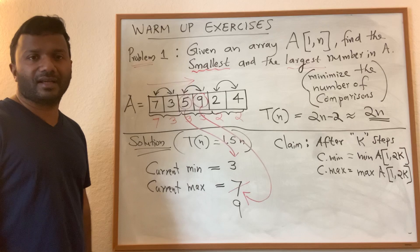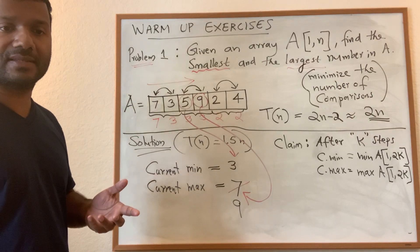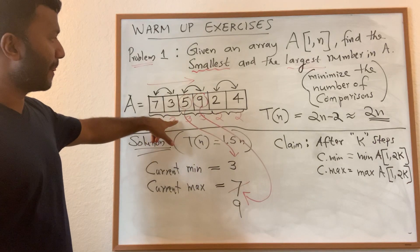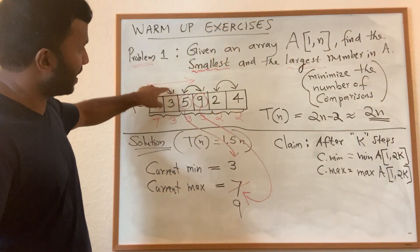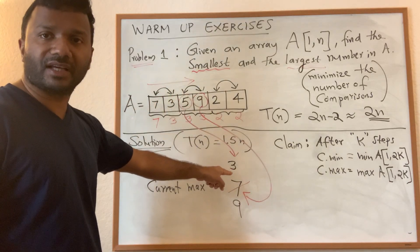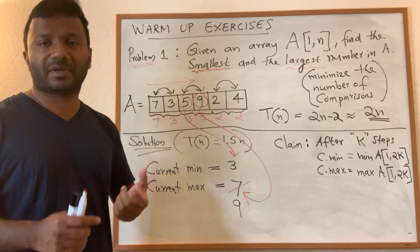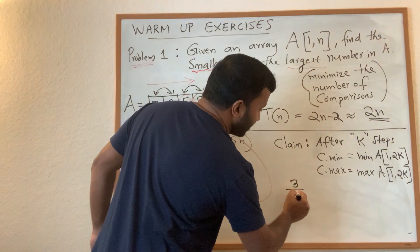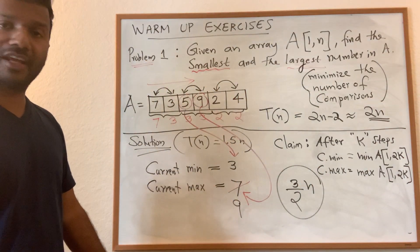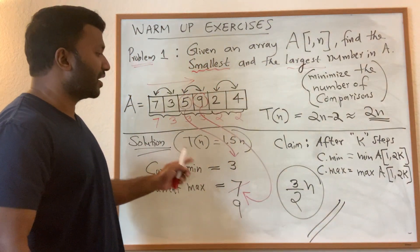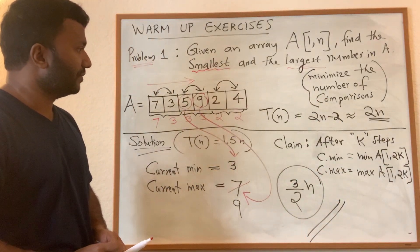For the analysis: at each step we handle two numbers with three comparisons — one between the pair, one comparing the smaller with current min, and one comparing the larger with current max. That is three comparisons per pair, or three over two comparisons per element. With n elements, the total is 3n/2 comparisons, which is clearly better than the previous 2n algorithm.